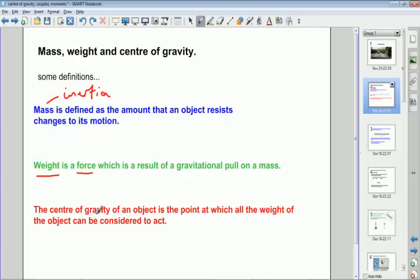And then we come to the center of gravity definition. So the center of gravity of an object is the point at which all the weight of the object can be considered to act. Okay, so it's a particular point, and it's actually the point at which we draw the force arrow for weight.